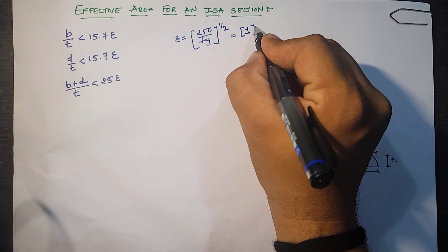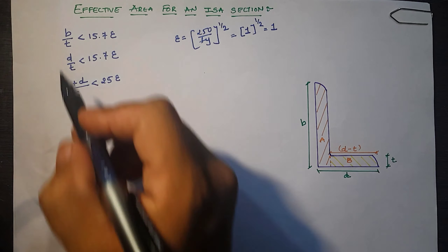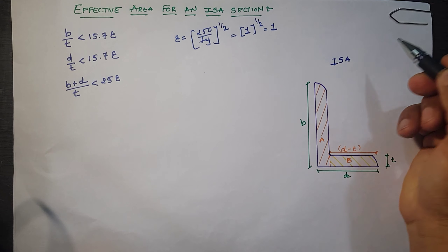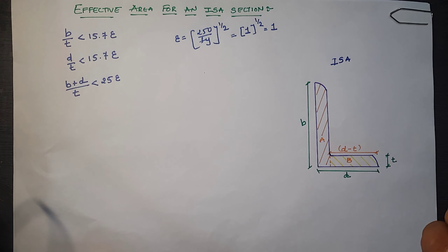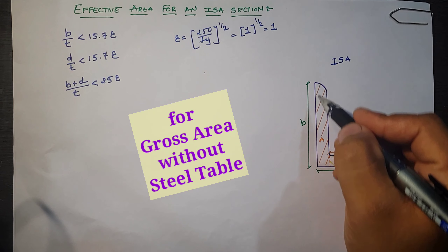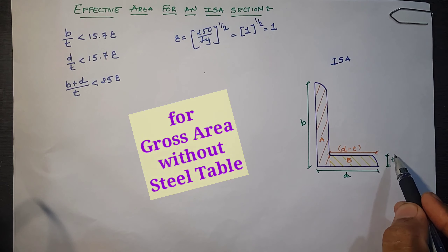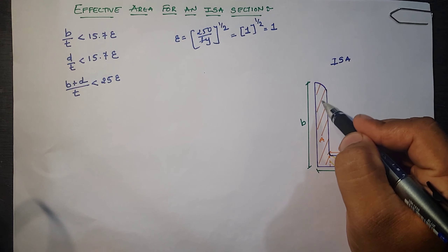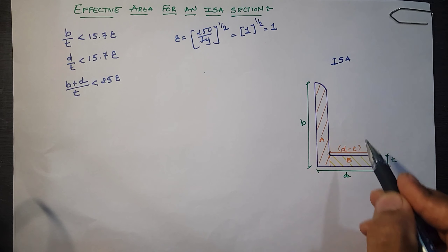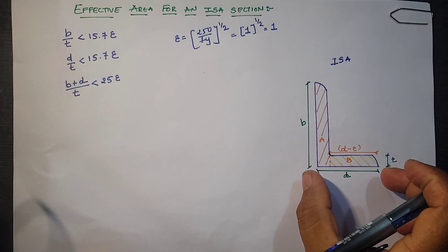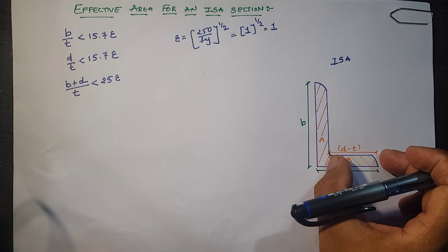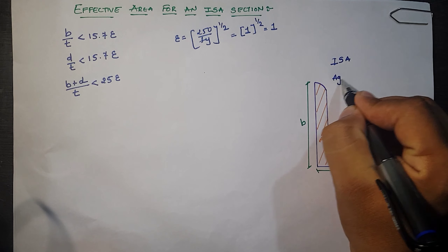For example, for ISA 75×75×8, b = 75, d = 75, and t = 8 mm. If we cut the section into two parts A and B, the area of part A is b × t, and the area of part B is (d − t) × t, since d is the total width and t is already counted in part A.